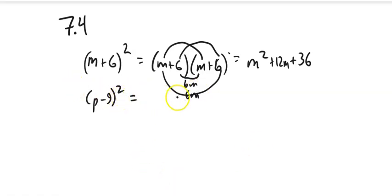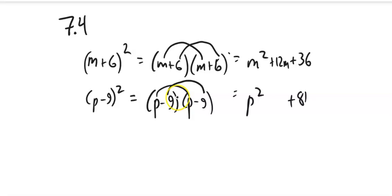Notice this (p-9)² - same sort of thinking. When you square something, you multiply it by itself. There's my first term, p². There's my last term, -9 times -9 is positive 81.